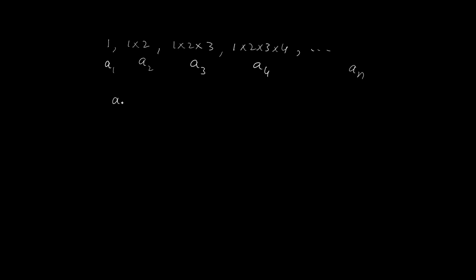The first term is 1, the second term is 1 × 2 and 1 × 2 we know is 2 factorial. So the first term is 1 factorial.